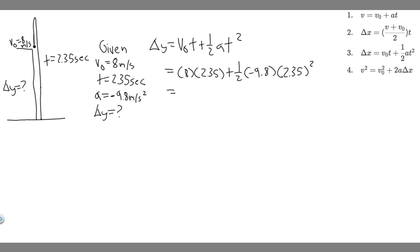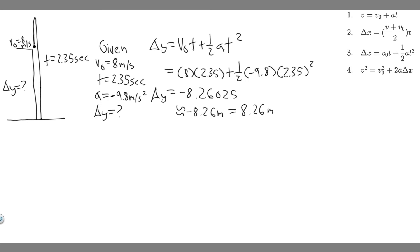We calculate 8 times 2.35, plus 0.5 times -9.8 times 2.35 squared. This gives delta Y equals -8.26025, which we round to -8.26 meters. The negative means it went down, but since we take the absolute value, the height of the cliff is positive. So the answer to Part A is 8.26 meters.